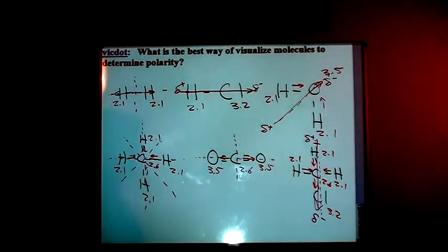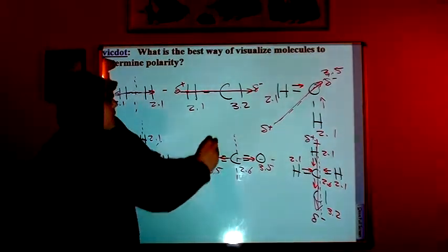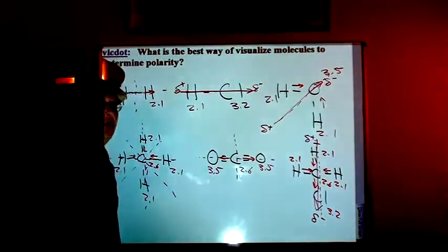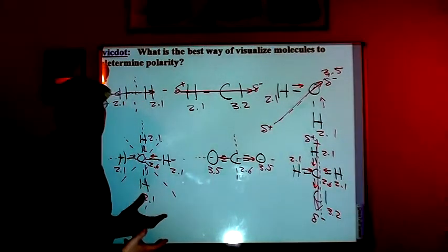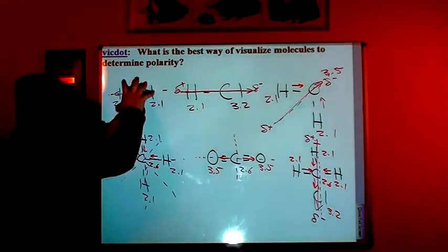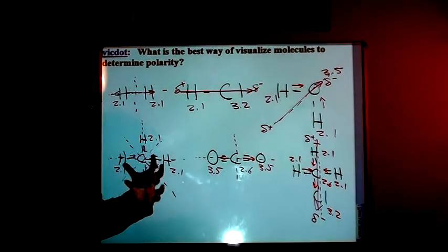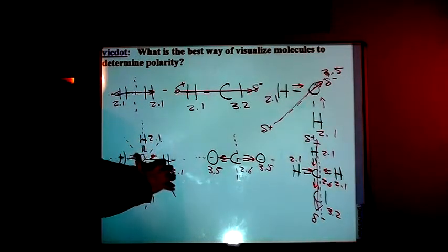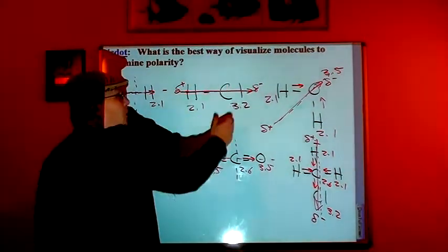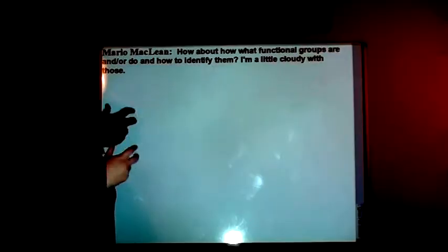This molecule is polar. So the best way to visualize molecules to determine polarity: if the molecule has only one line of symmetry, then the molecule is a polar molecule, because the electrons are going to be pulled more towards one side than the other. If the molecule has two or more lines of symmetry, then the molecule has a symmetrical distribution of electrons throughout, and there are no poles to the molecule. Polar means it's got poles. Nonpolar? Well, pretty self-evident — no poles.